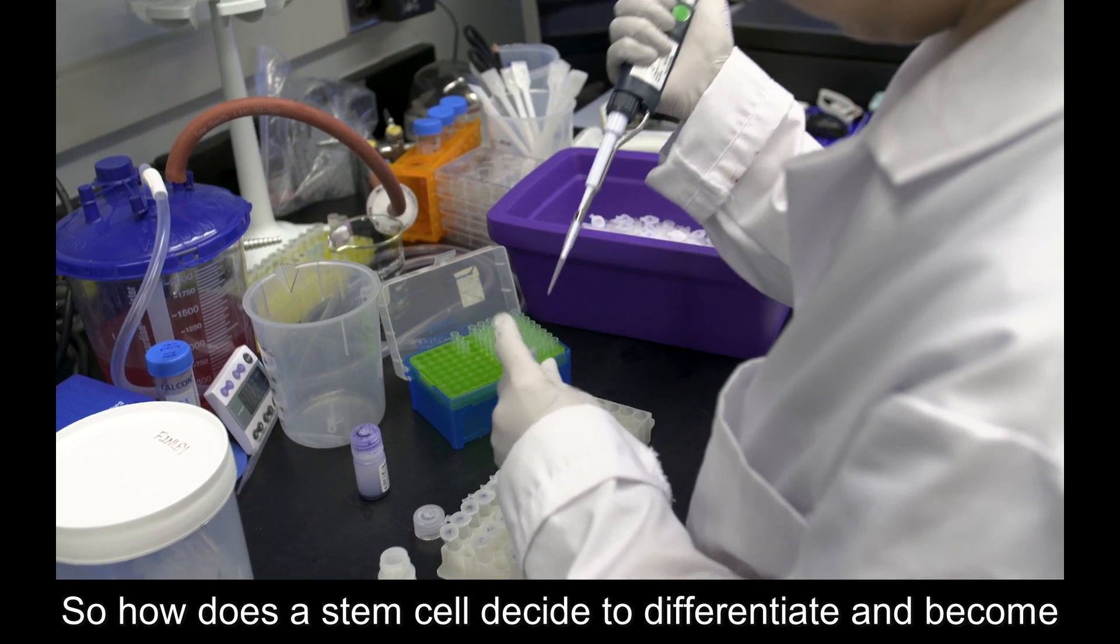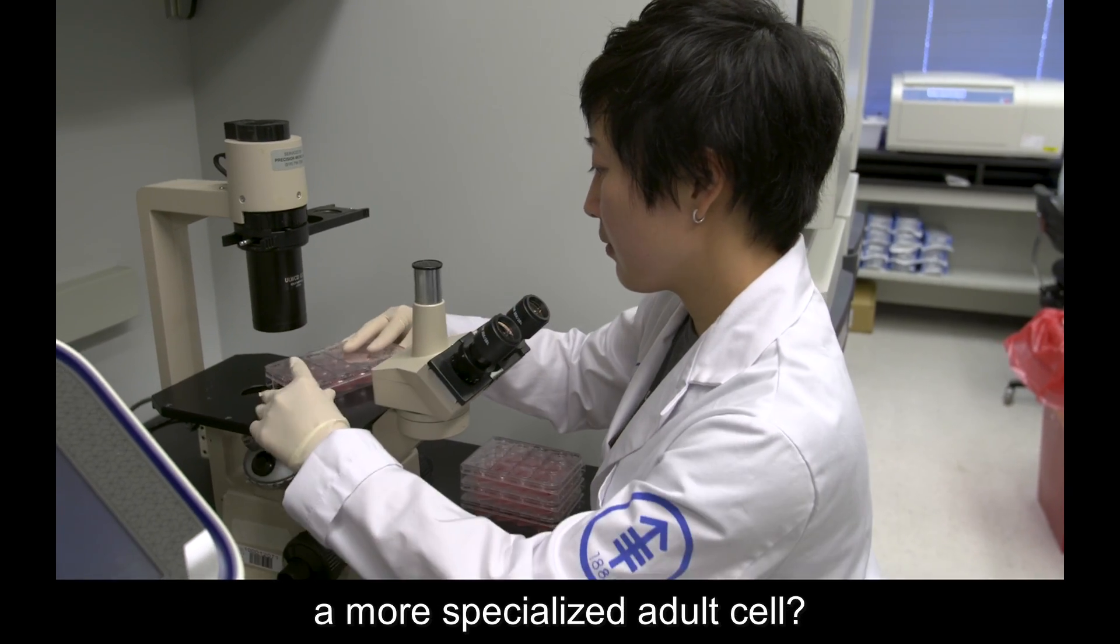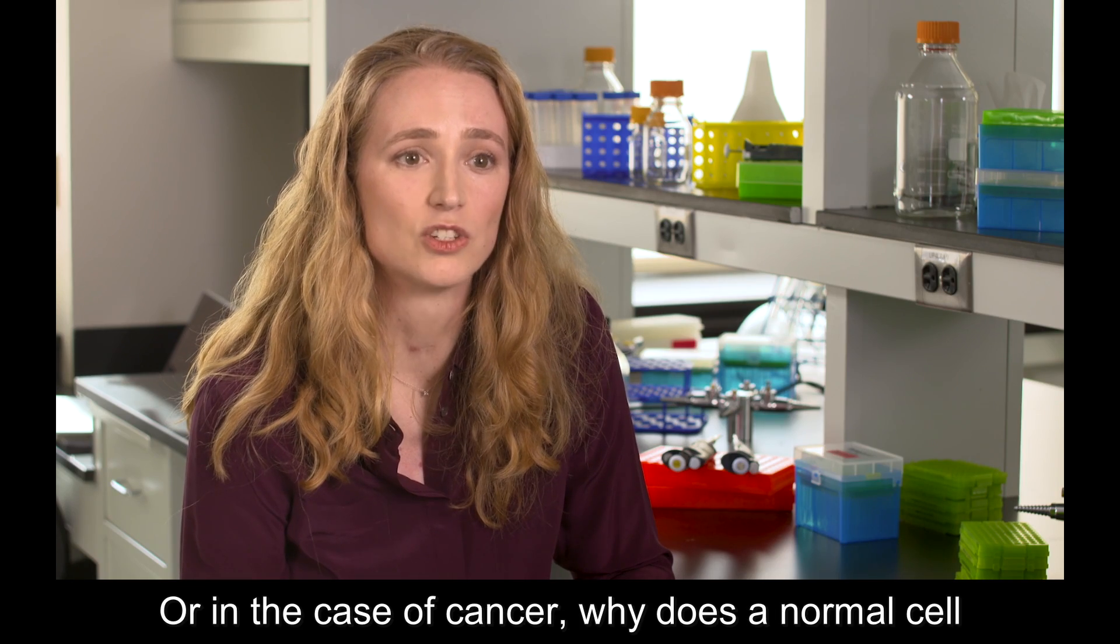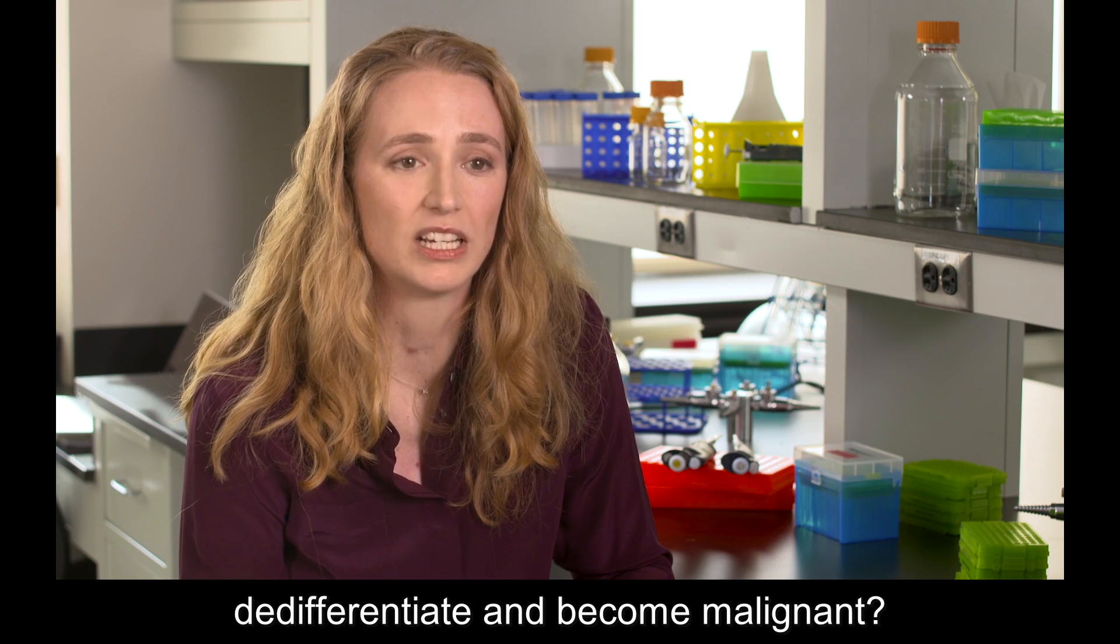So how does a stem cell decide to differentiate and become a more specialized adult cell? Or in the case of cancer, why does a normal cell de-differentiate and become malignant?